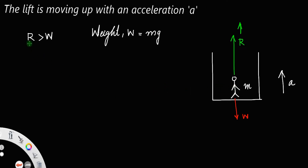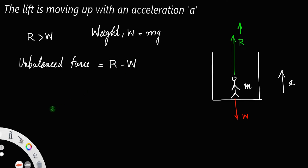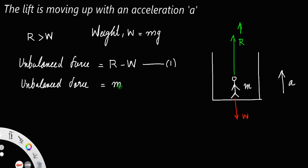So the reaction or apparent weight is greater than weight. The unbalanced force will be the greater force minus the lesser force, that is R minus W — call this equation number 1. And from Newton's law, the unbalanced force will always be mass into acceleration, m times a — call that equation number 2.